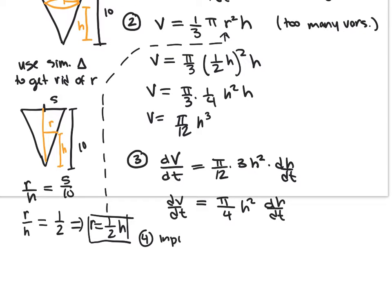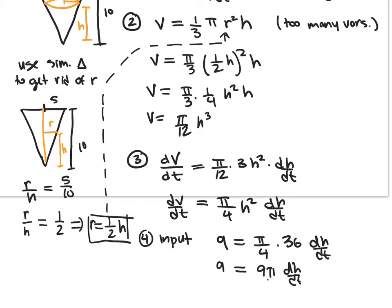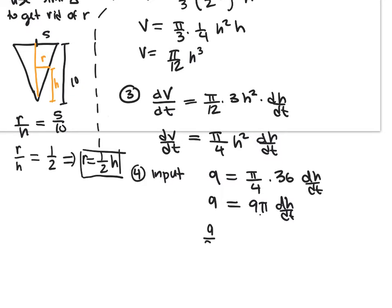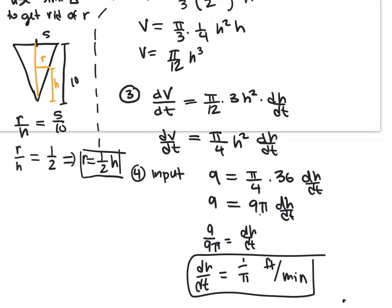Step four: input the stuff you know. You knew that dv/dt was 9. Which h did you care about? h equals 6. So: 9 equals pi over 4 times 36 times dh/dt. Can you reduce 36 over 4? Yes — 9. So 9 equals 9 pi dh/dt. Therefore dh/dt equals 9 over 9 pi, which is 1 over pi. Its units — h is in feet and time is in minutes — so 1 over pi feet per minute.